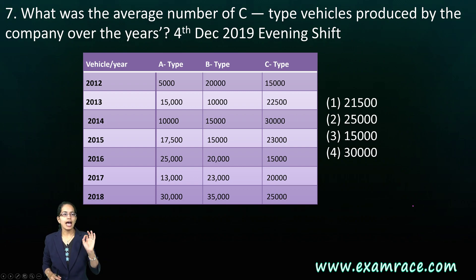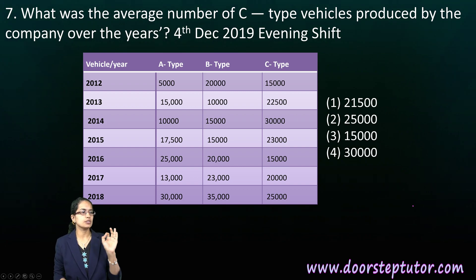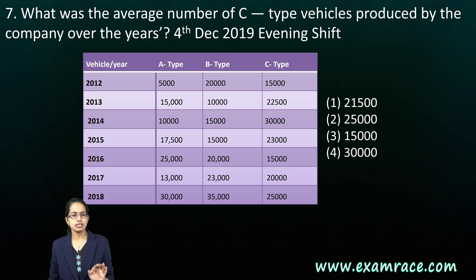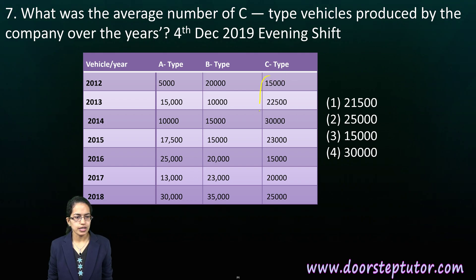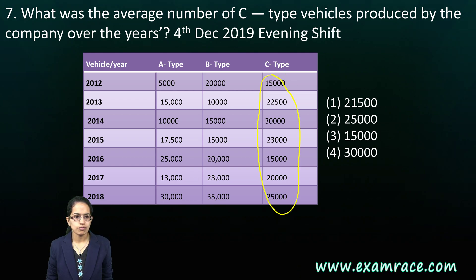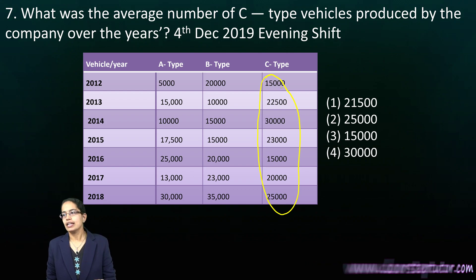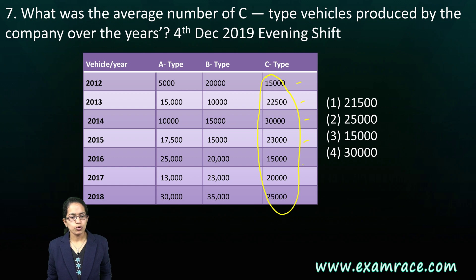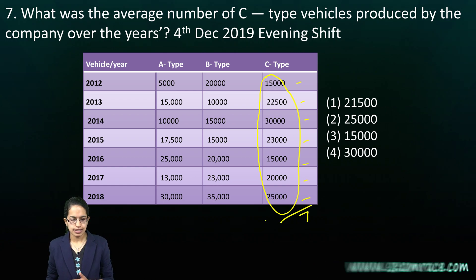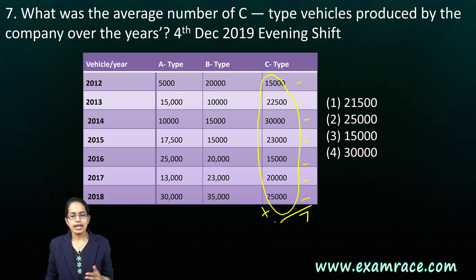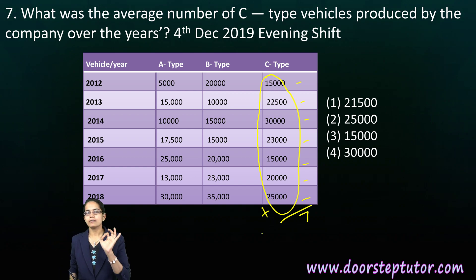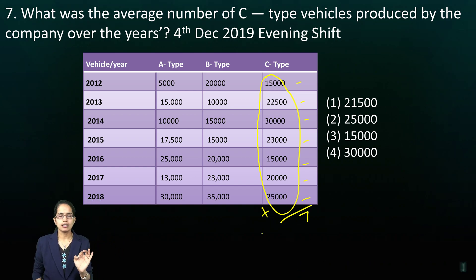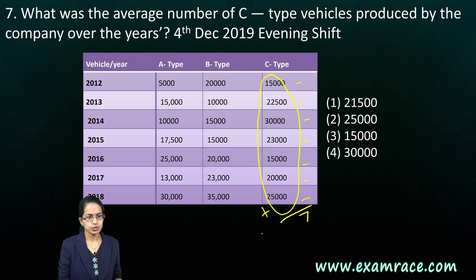The next question asks for the average number of C-type vehicles produced by the company over the years. We take all the C-type vehicle values across all 7 years, add them up, and divide by 7. That gives the average number of C-type vehicles produced — a very direct question.